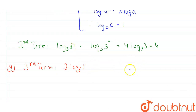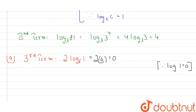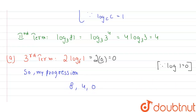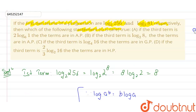Since log of 1 equals 0 irrespective of any base, 2·log base 6 of 1 = 2×0 = 0. So the progression is 8, 4, 0 — with a common difference of −4. Therefore option A is correct: the terms are in AP.